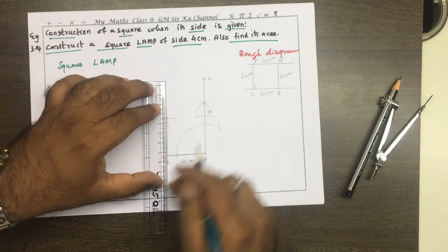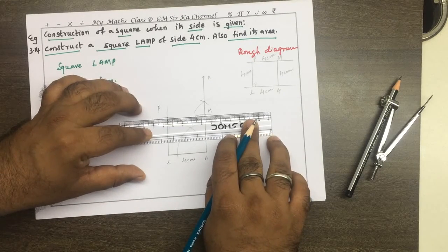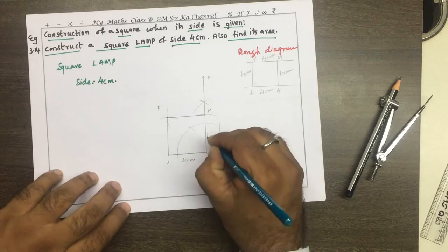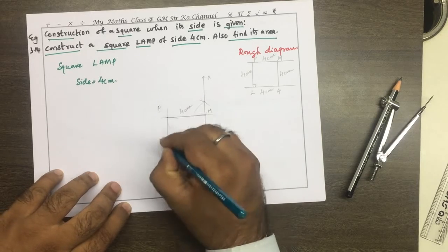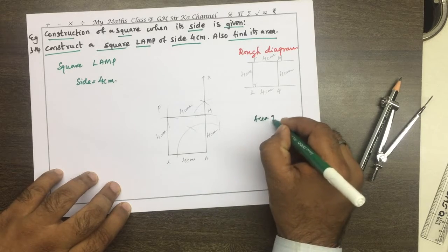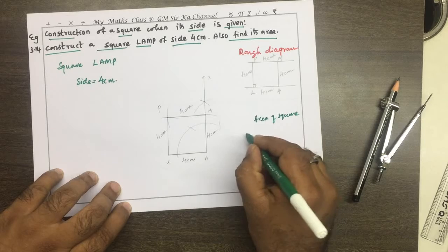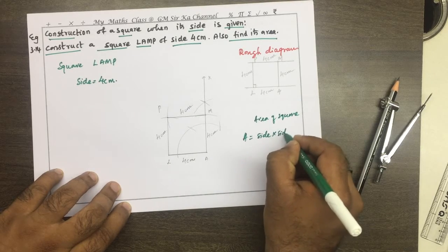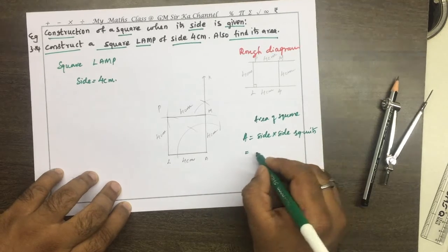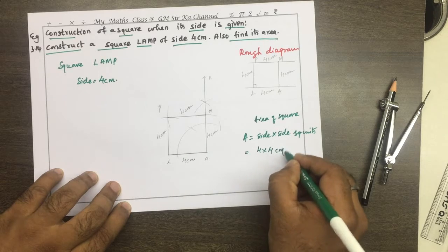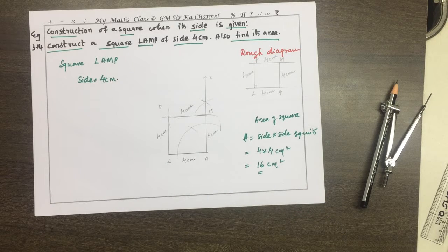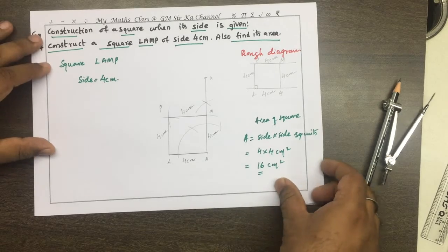We have obtained square LAMP. The area of the square is equal to side × side square units: 4 × 4 = 16 centimeter square is the area of the required square. Let us see one more example when one side of the square is given.